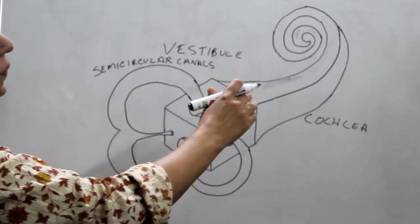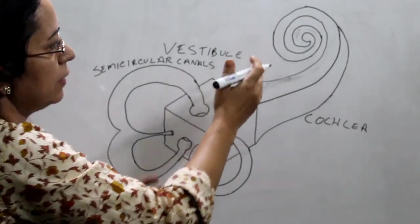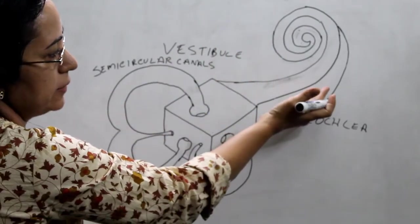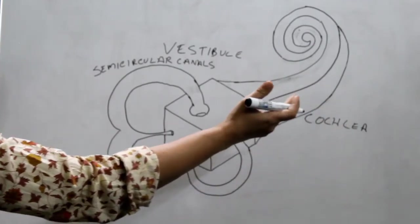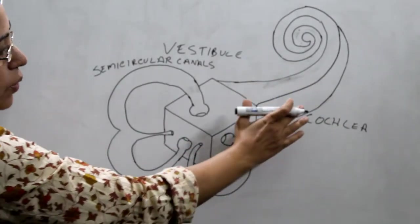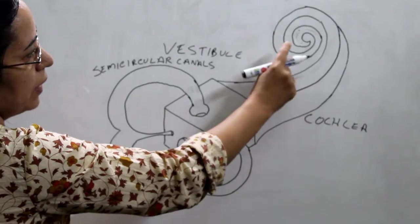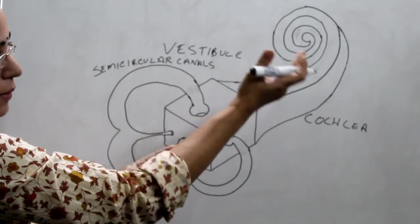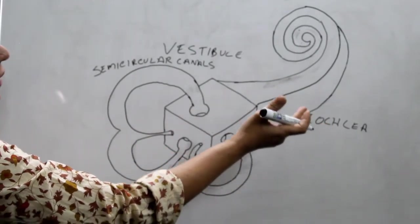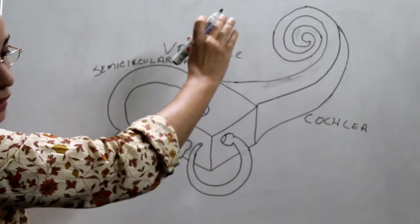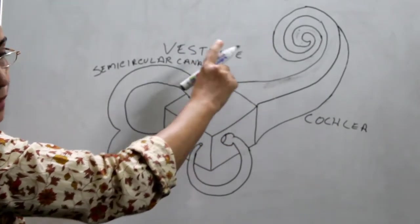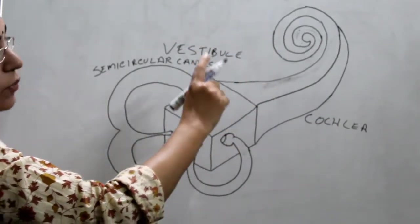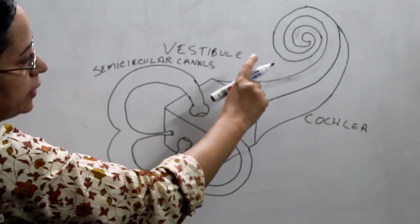Cochlea is a coiled tube. The basal turn projects into the medial wall of the middle ear, forming the promontory. And the cochlea is in continuation with the fundus of the internal auditory meatus.